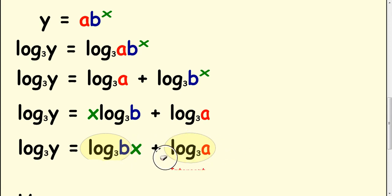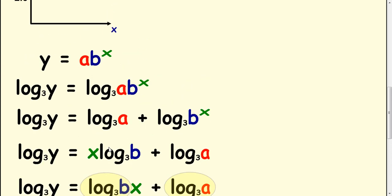And that's what we're looking at here. This is your intercept, and this part here, log b to the base 3, is your gradient. So we can equate these things using the information from the graph.